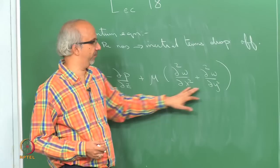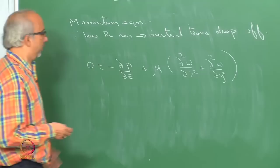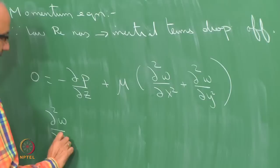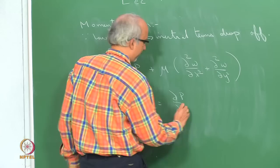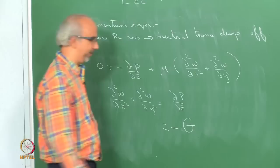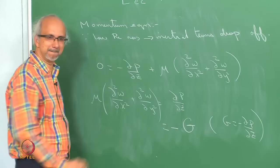We write this as ∂²w/∂x² + ∂²w/∂y² = −g/μ, where g = −dp/dz is positive. We do the usual stuff and make the equations dimensionless. What are the important scales? The characteristic length in the x direction is L, the wavelength; the characteristic length in the y direction is d, the gap between the plates.